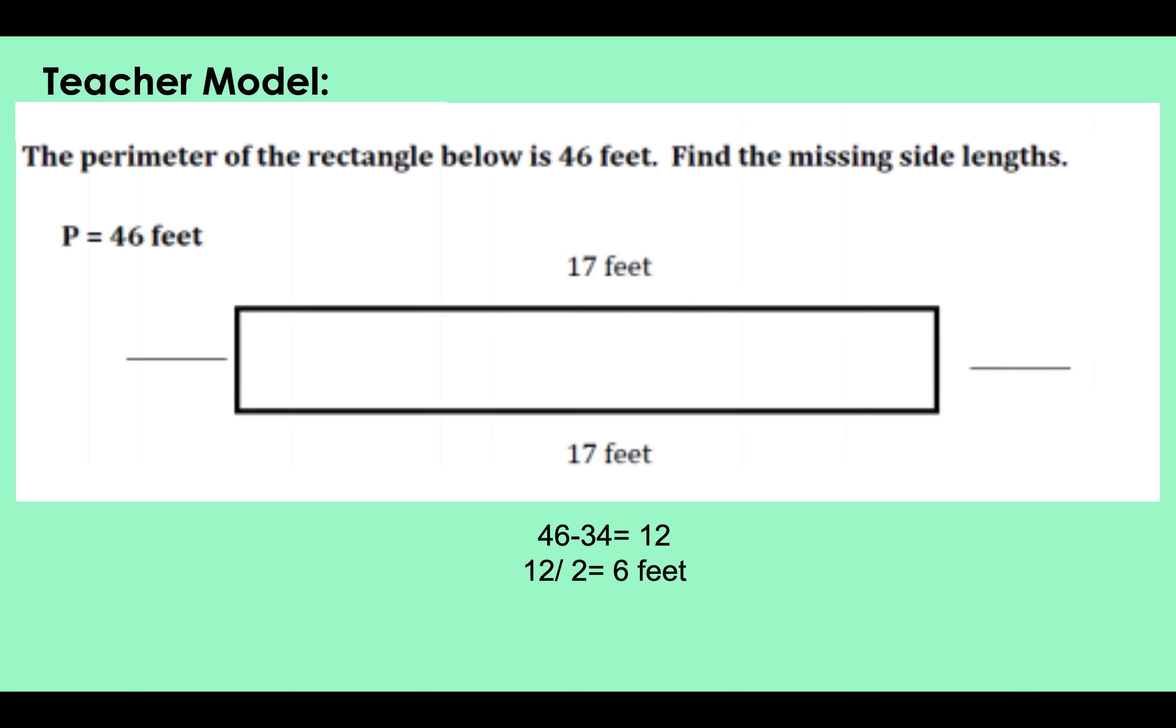So I'm doing 46 minus 34 equals 12, but 12 isn't our answer. We're missing two side lengths, so we need to split that 12 in half. 12 divided by 2 equals 6 feet, so each side, the missing side lengths, is 6 feet.